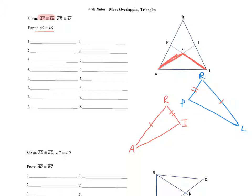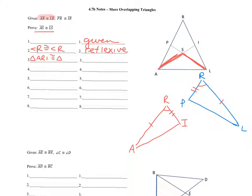Angle R — right, we're going to start with angle R. Step one is you're given, always. We're going to next say that angle R is congruent to angle R because it's reflexive. Don't forget to mark that. Because then you see SAS in both of those triangles.